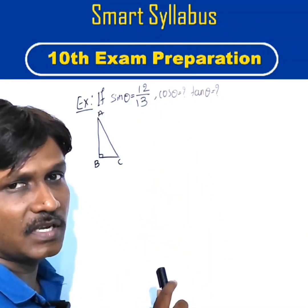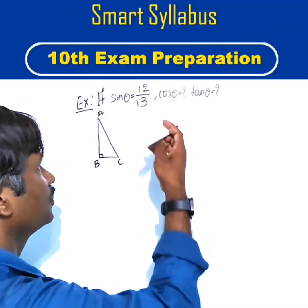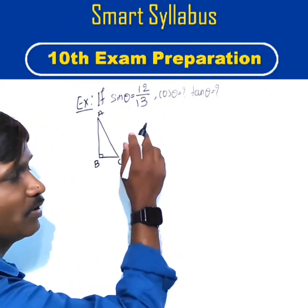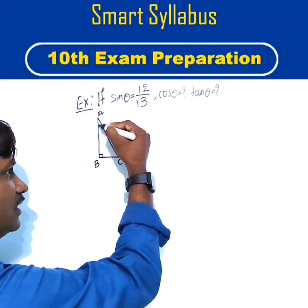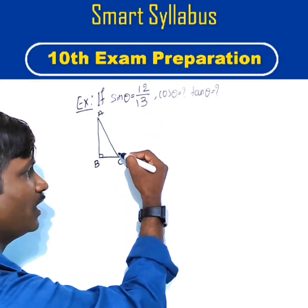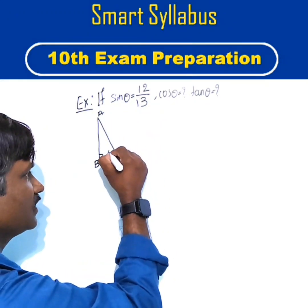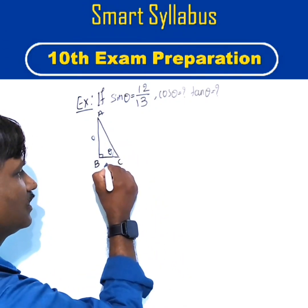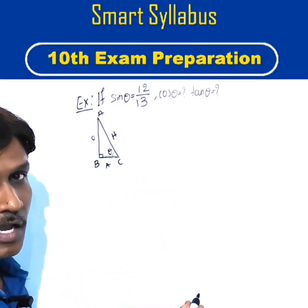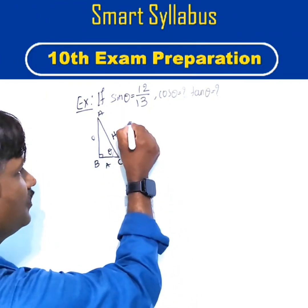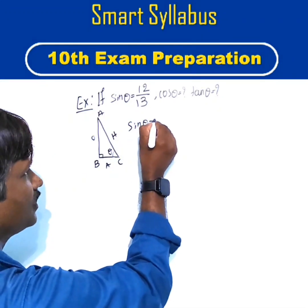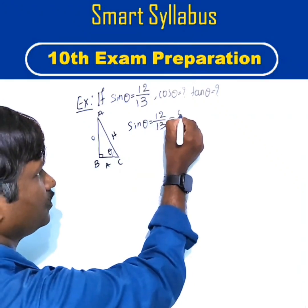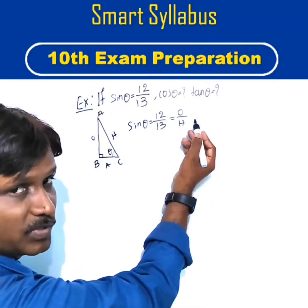Given sine theta is equal to 12 by 13, we need to find the value of cos theta and tan theta. We consider triangle ABC. You have complete freedom to place theta at either angle A or angle C. For easiness, I'll consider theta here. The side opposite to theta is called the opposite side, the side next to it is the adjacent side, and the longest side is the hypotenuse. Sine theta equals opposite upon hypotenuse.